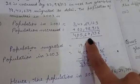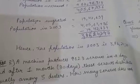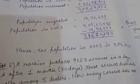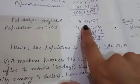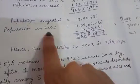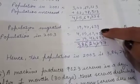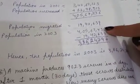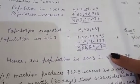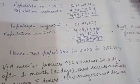Since some people migrated from Mumbai to Delhi, we subtract the migrated population of 19 lakh 42,633. The exact population in 2003 is the increased population minus the migrated population. After subtraction, we get 3 crore 86 lakh 24,803.